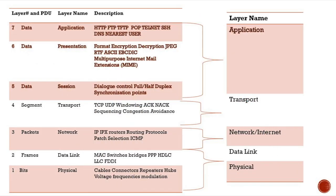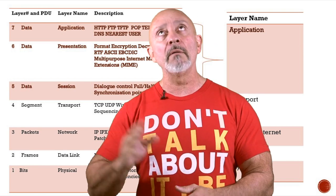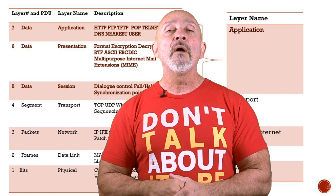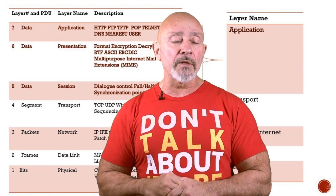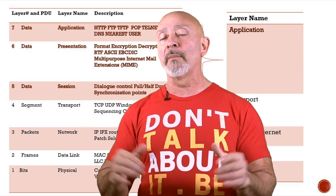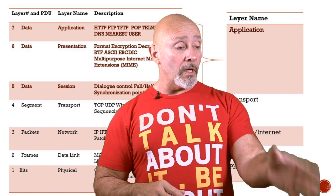The OSI model is seven layers — we know this. But the TCP/IP model is only four layers, maybe five. That is a collapsed architecture. There's also the Cisco data model, and they decided they wanted to make it into five layers, but we'll talk about that in a bit.